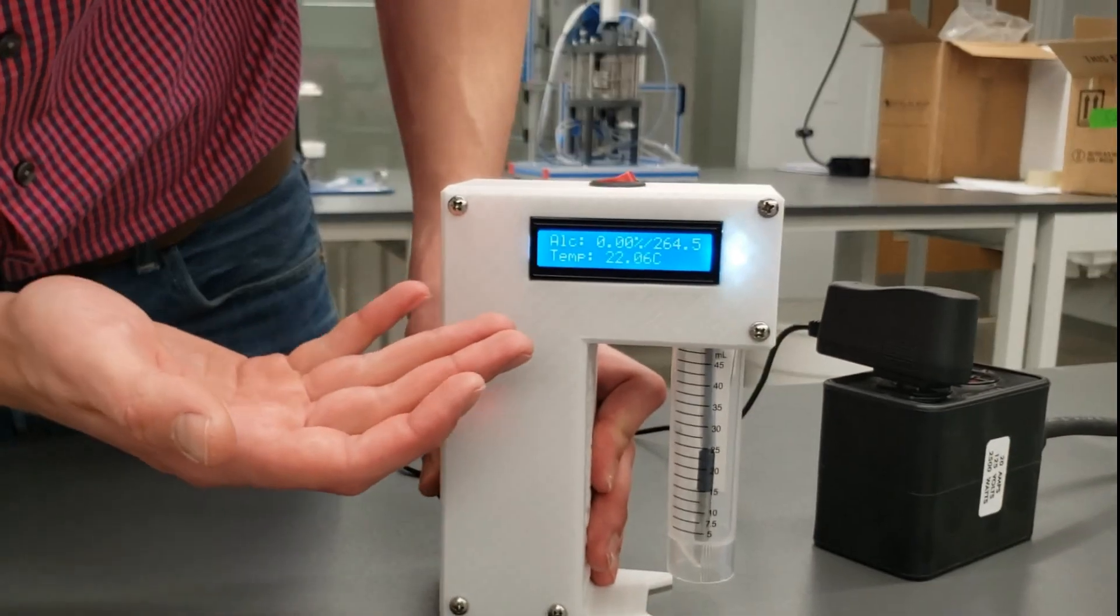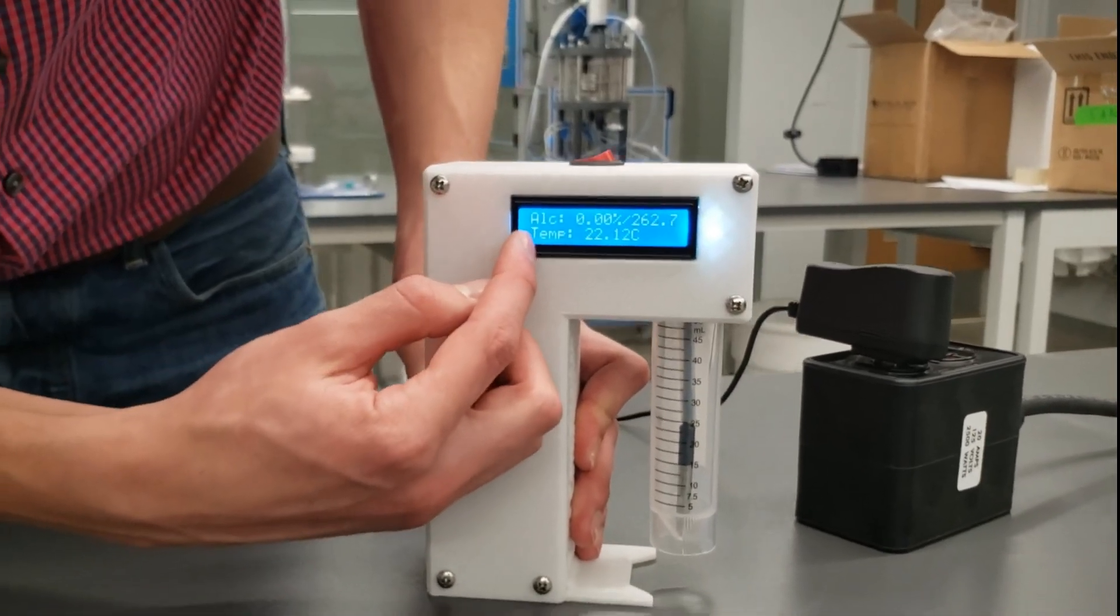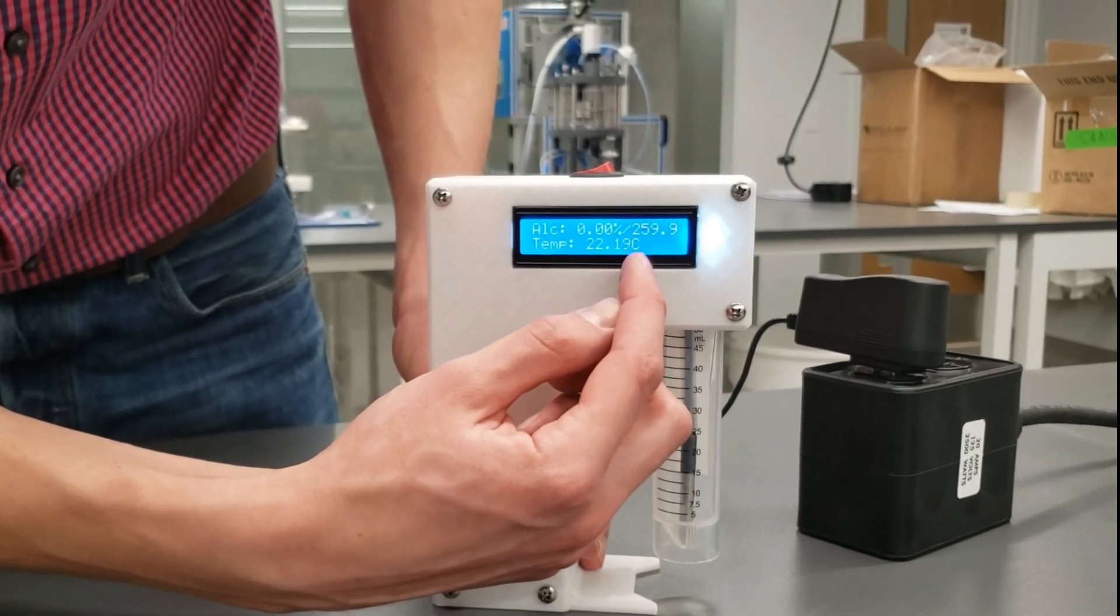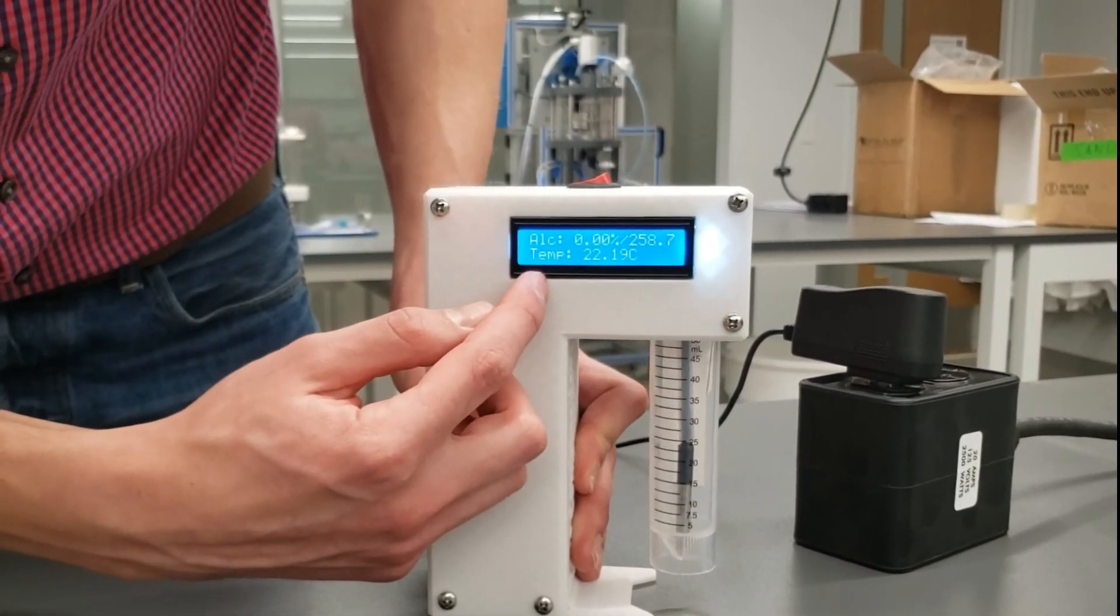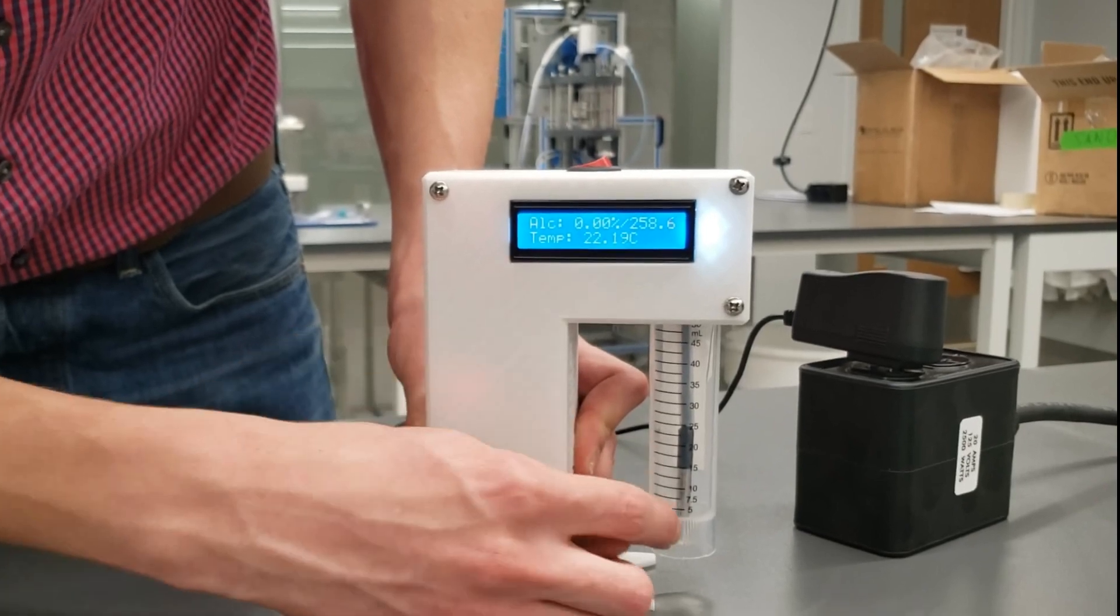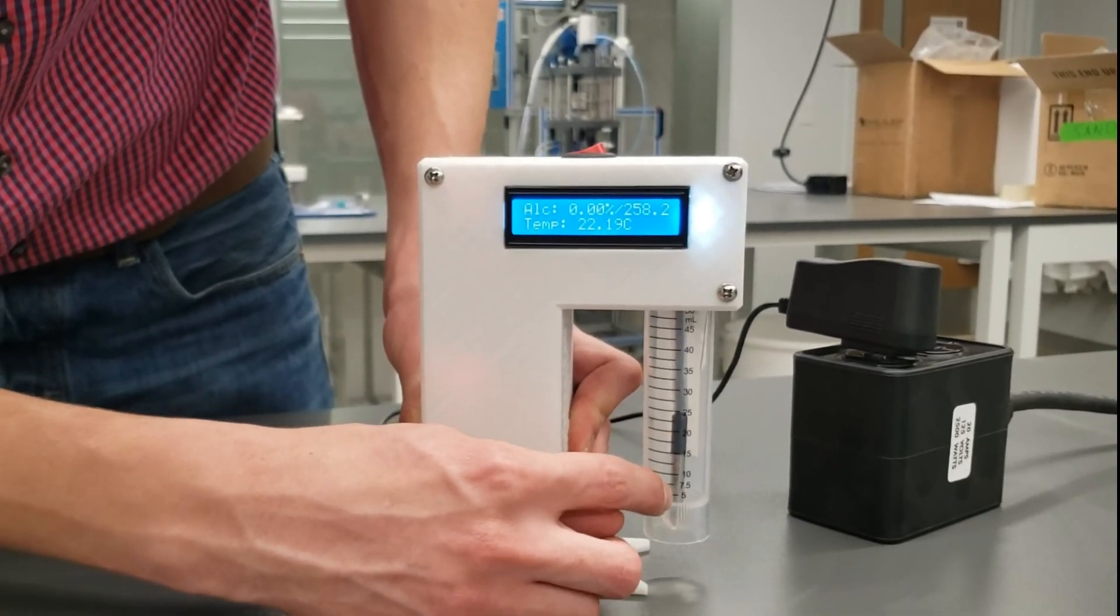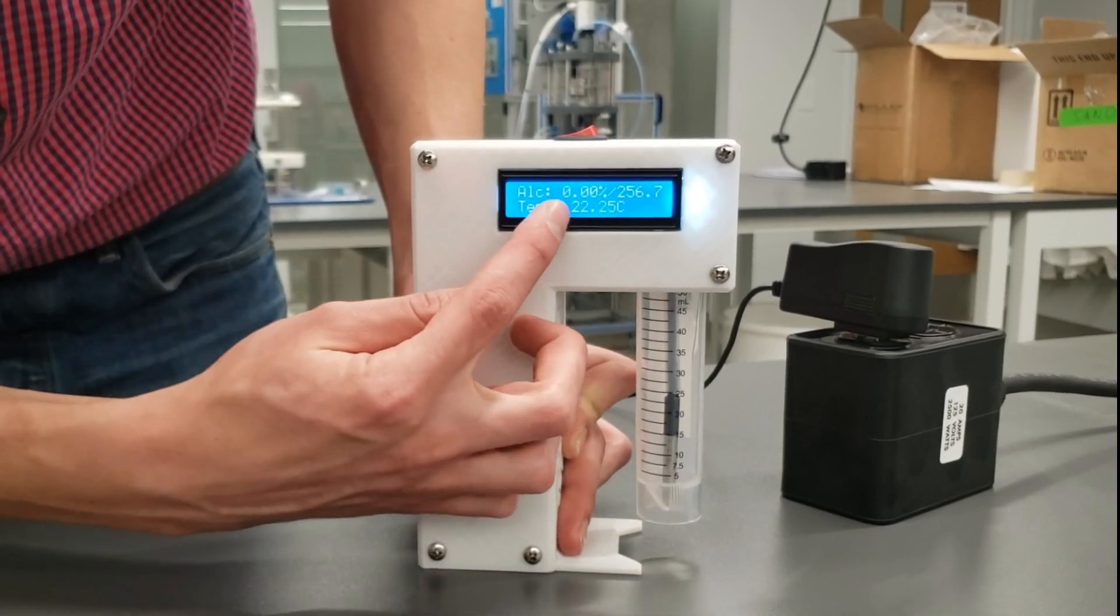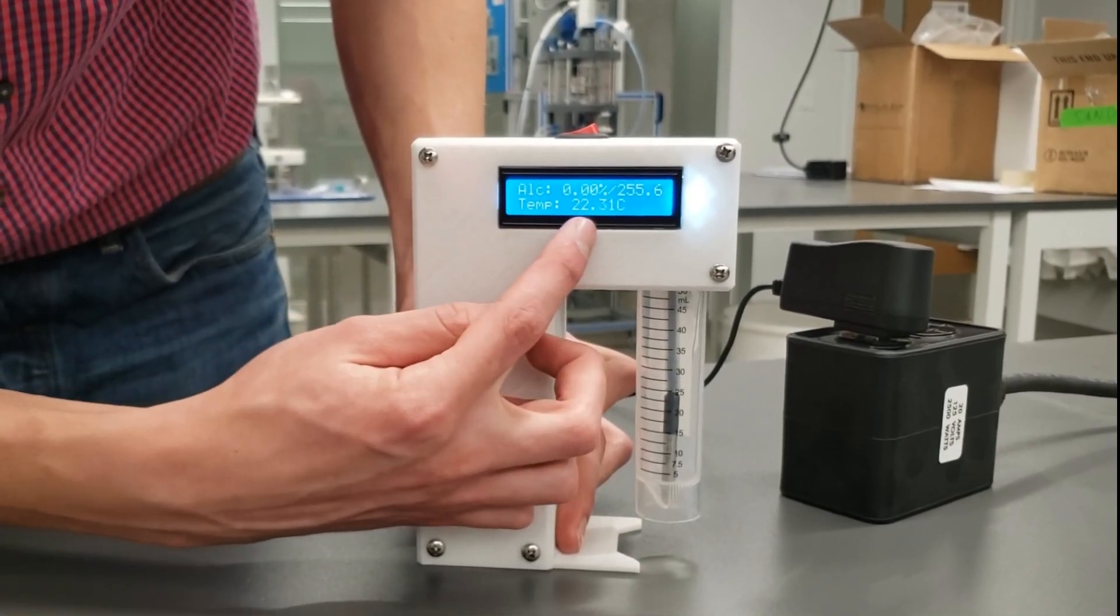Now that the detector is warm you can see that it displays the alcohol percentage and then this raw reading to the right of the percentage. You can also see that it's displaying the temperature of the sample in the sample tube. Now for the simple use case of this detector you'll only be using the alcohol percentage there and the temperature of the sample.